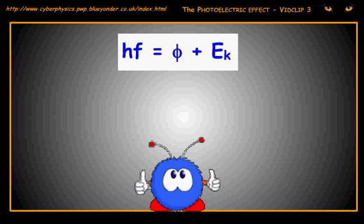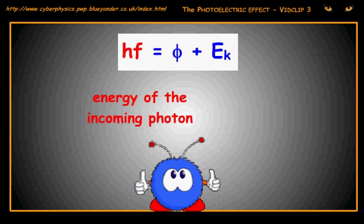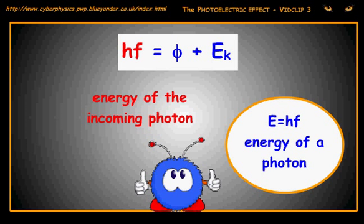The equation given on your datasheet for the photoelectric effect is HF equals phi plus EK. You have to be able to define clearly each term in the equation. HF is the energy of the incoming photon. Remember that E equals HF is the equation for a photon.